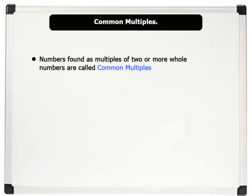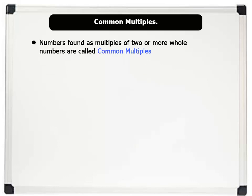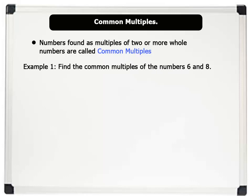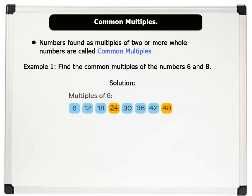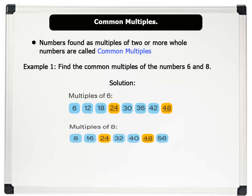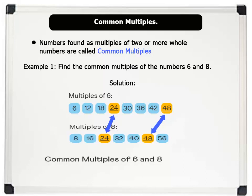Numbers found as multiples of two or more whole numbers are called common multiples. Let us see an example. Find the common multiples of the numbers 6 and 8. Solution, Step 1: list the multiples of the number 6, and also list the multiples of the number 8. Notice that 24 and 48 are common to both numbers. Therefore, the common multiples of the numbers 6 and 8 are 24 and 48.